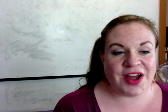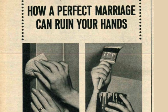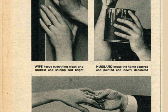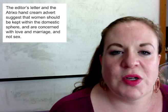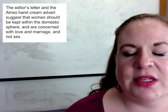In the Atrixo hand cream advert, you can see that we get this representation of women wanting to have this perfect marriage. It says the wife keeps everything clean and spotless and shining and bright. So it does suggest that women are there to do the housework. We don't see her body — we just see her hands — so her body is not being objectified, but her role in the household perhaps is. The fact that we see her holding hands with a man with a wedding ring on suggests that women are there to be wives and homemakers and not just there for sexual pleasure.